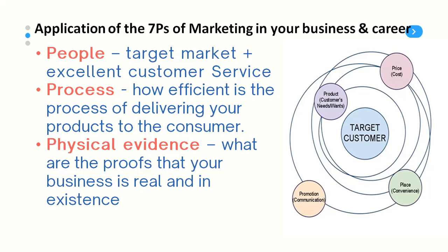Payment channels should be available — USSD code, QR, money transfer, mobile wallet, PayPal, Stripe, Flutterwave, Paystack, and bank transfers. The process should be easy and you must map it from pitching to delivery and after-sales. The seventh P is Physical Evidence — what are the proofs that your business is real? Social proof, testimonials, receipts, websites, referrals, your address, CAC certificate, awards, online reviews — these are all physical evidence that your business exists.